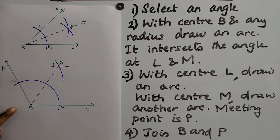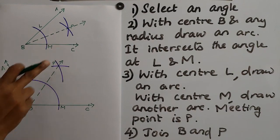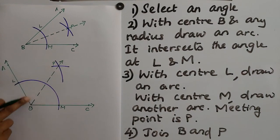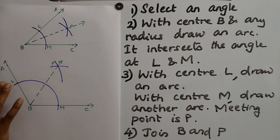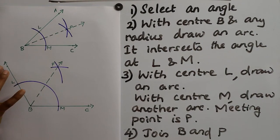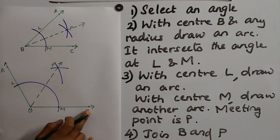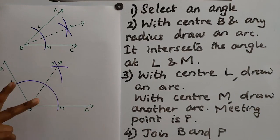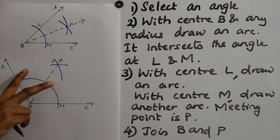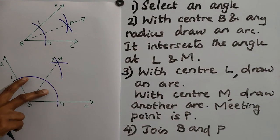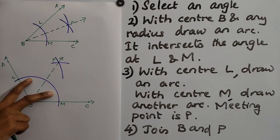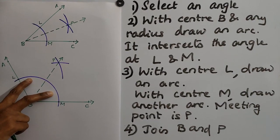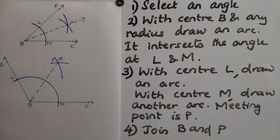The dotted line BP divides the angle ABC into two equal parts. The measurement of these two angles will be equal. Hope you understand the concept. Thank you.